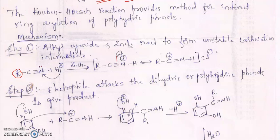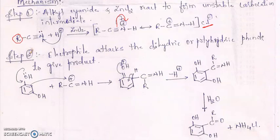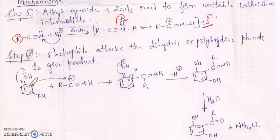The two electrons are taken to the nitrogen to stabilize it, so carbon gets a positive charge and the chlorine atom remains as Cl⁻. Step two: the electrophile attacks the dihydric or polyhydric phenol. The two electrons are pushed to the benzene ring, generating a negative charge, which attacks the electrophilic carbon at the ortho position, attaching R=NH.